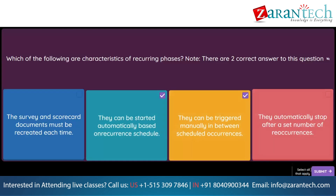Question. On which screen are the response start and end dates configured for an SAP Ariba Supplier Performance Management survey? Option 1: Participants. Option 2: Rules. Option 3: Timing. Option 4: Content.